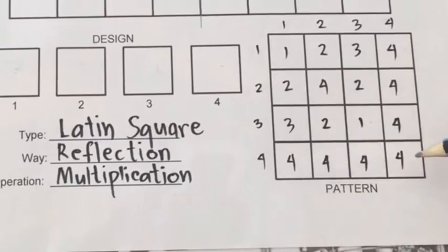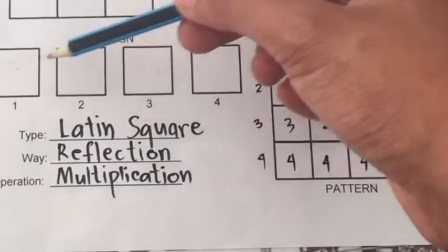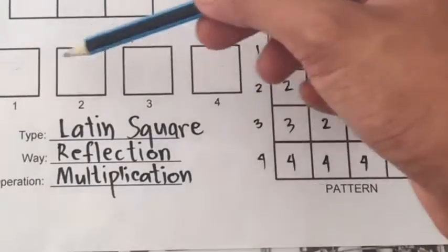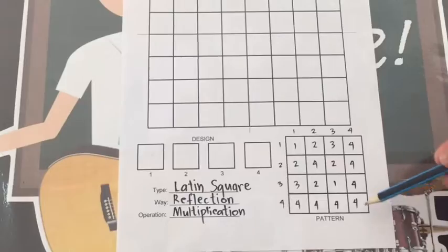4 times 4 is 16 — counting 1 through 16 — it's 4.